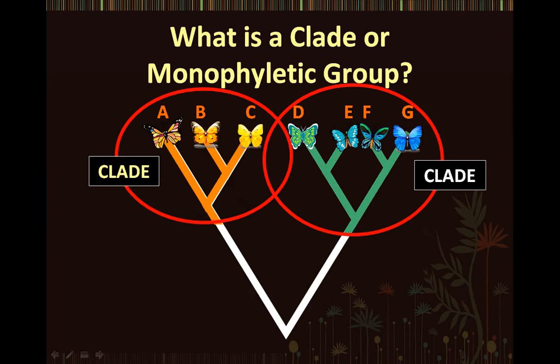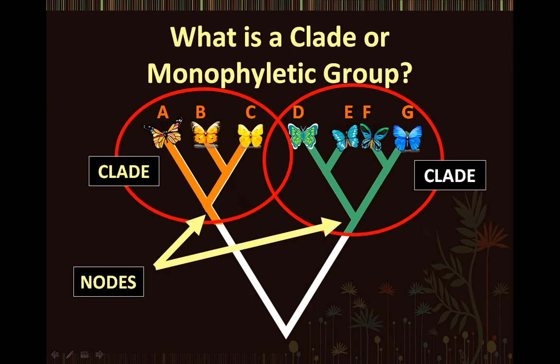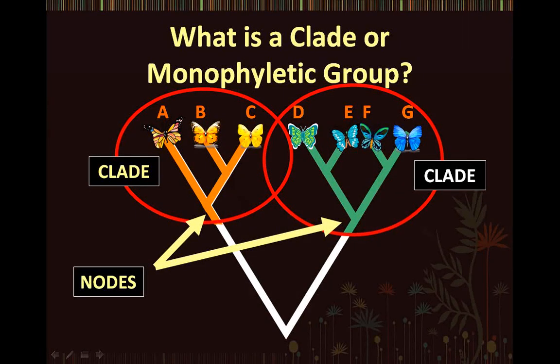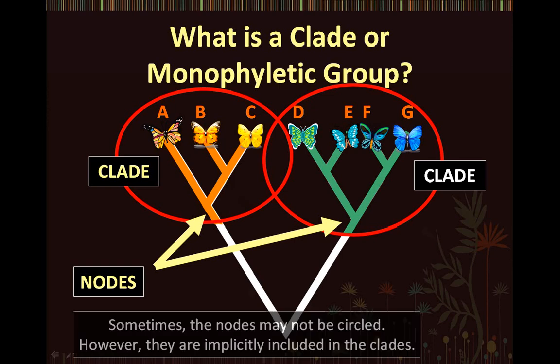Notice that each clade consists of all the organisms that are descendants of a common ancestor. So it includes the ancestral species of the node and all the species or branches that arise from that node or ancestor. Notice that the nodes, which represent the common ancestor, are always included in each clade. Sometimes the nodes may not be circled, but note that they are always included when we talk about clades.